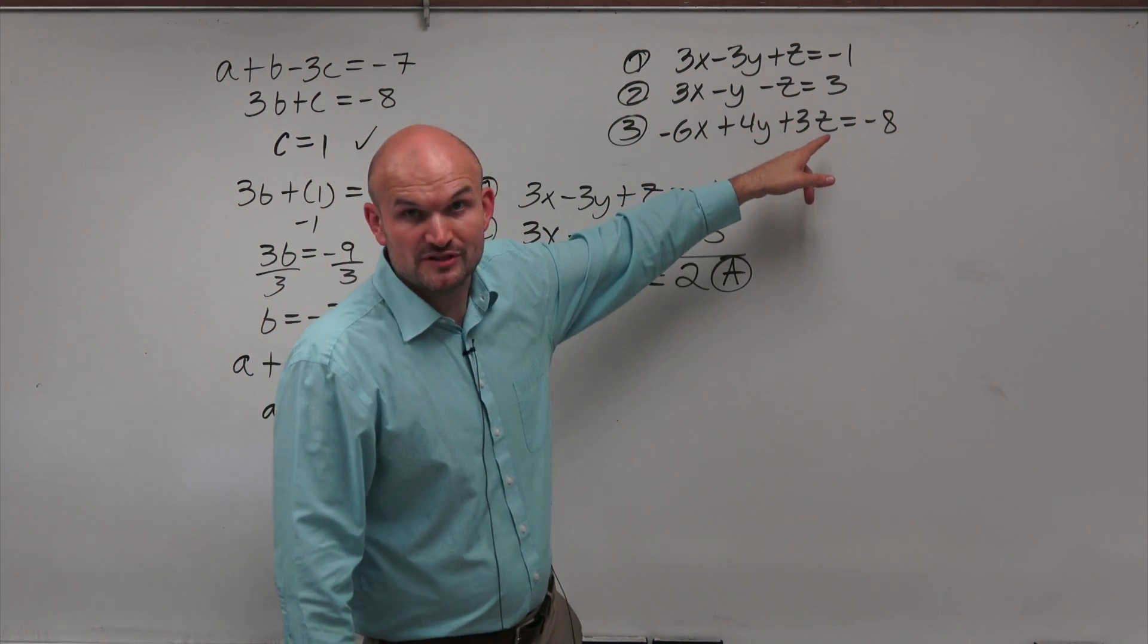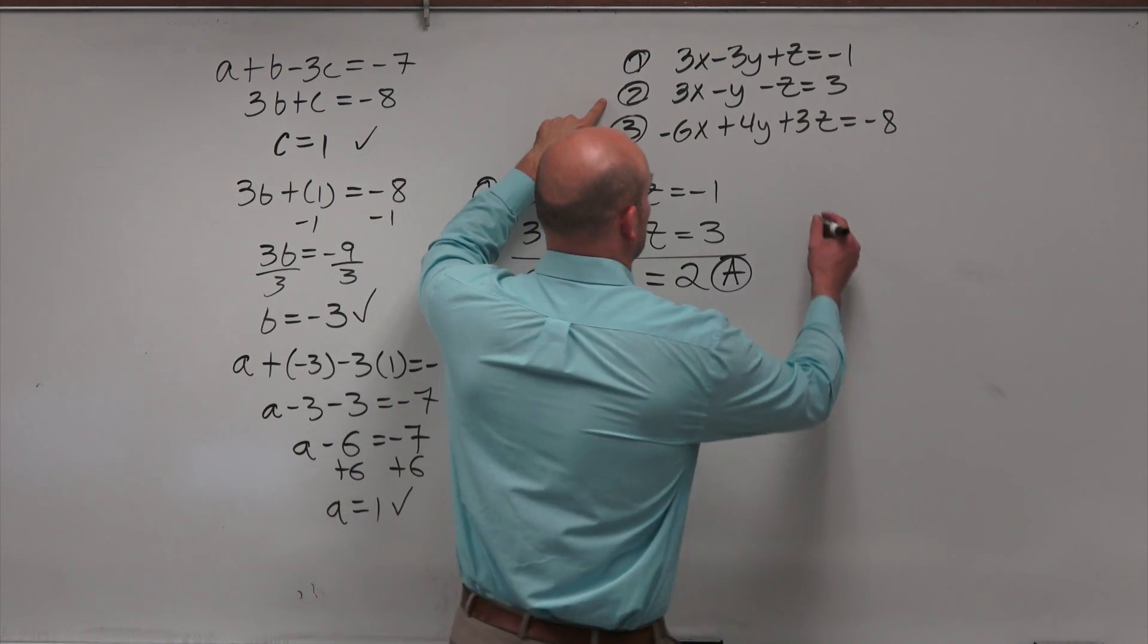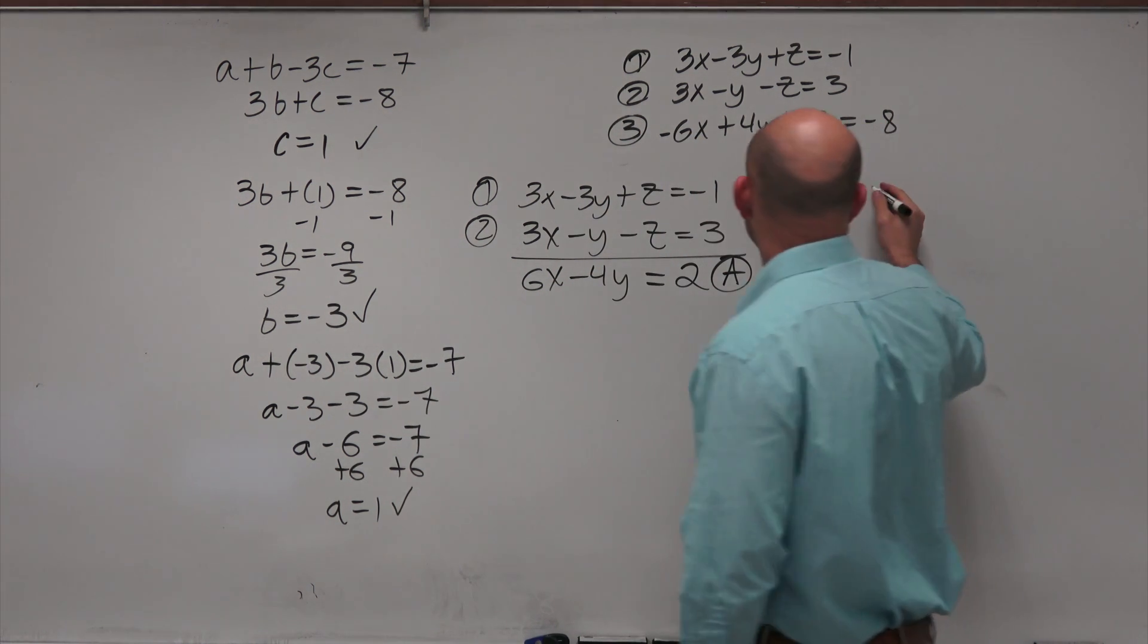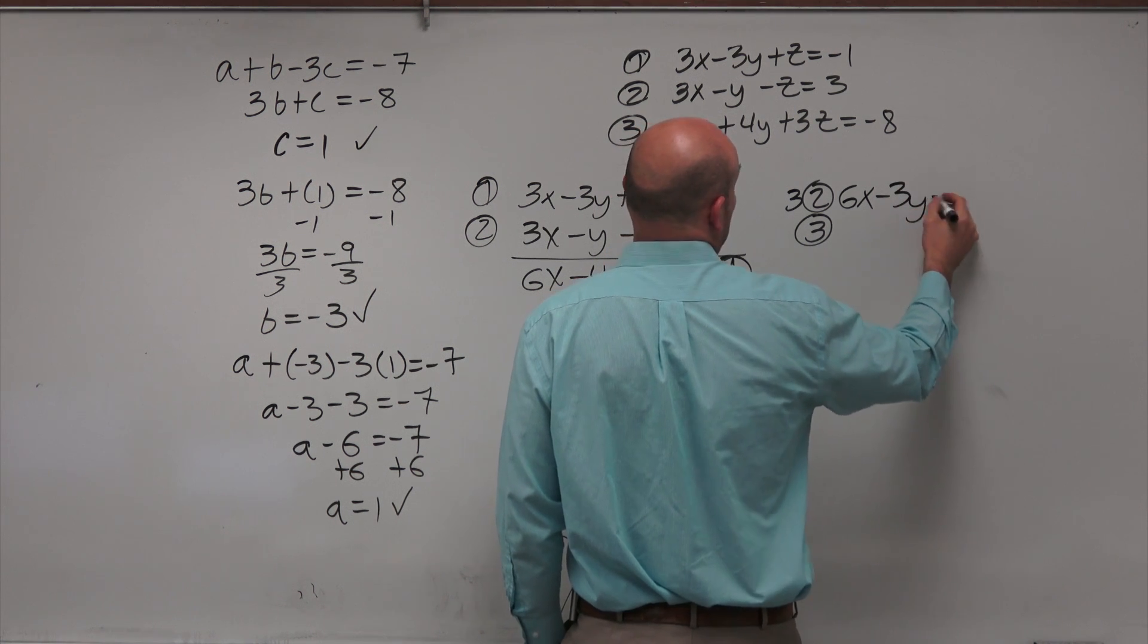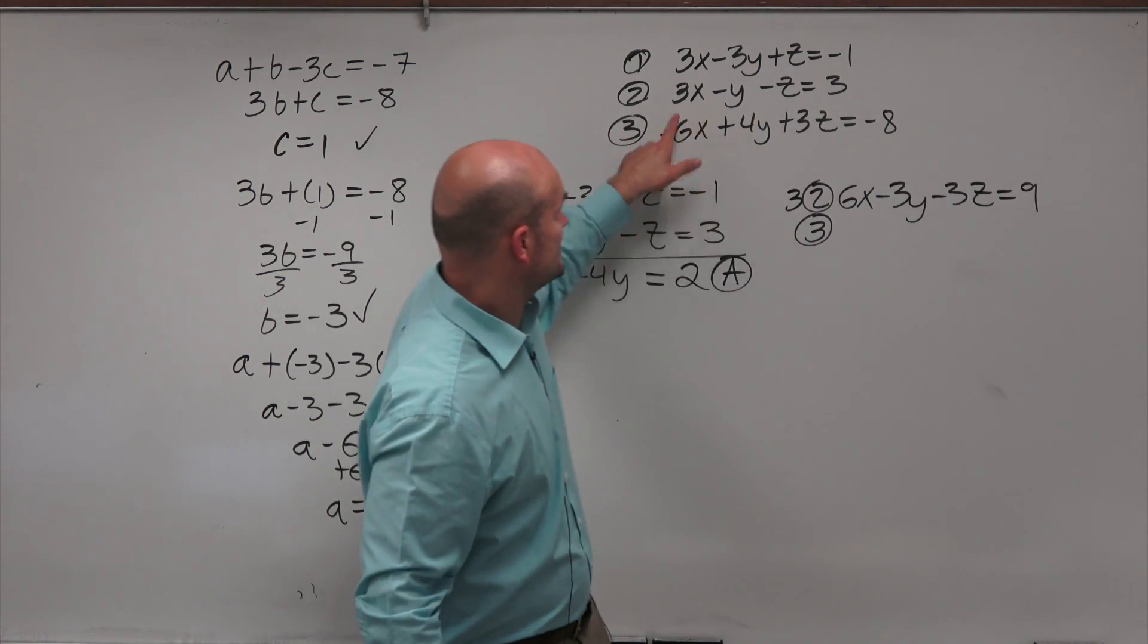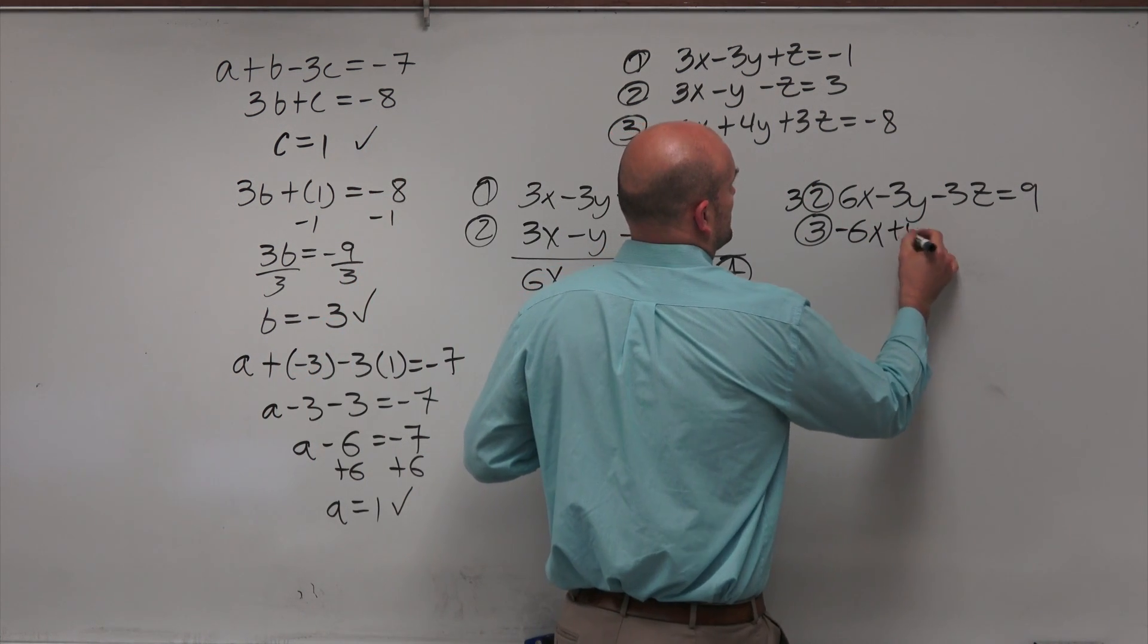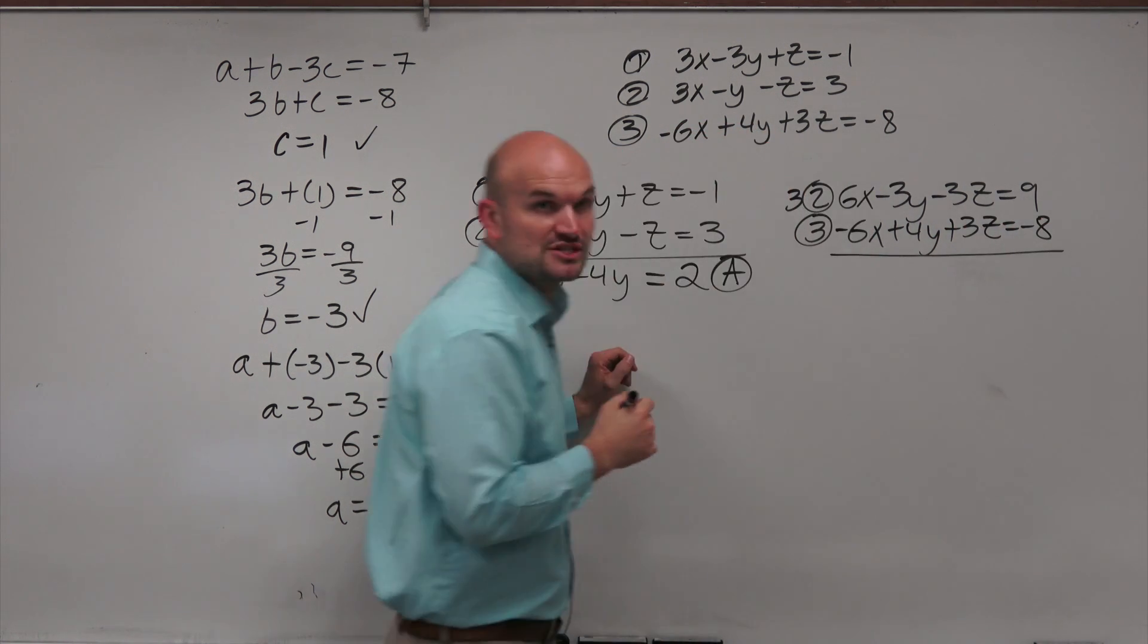However, they need to have the same coefficient. This needs to be a negative 3, and that needs to be a positive 3. So what I can do is I can multiply equation 2 by a scalar. And that scalar is going to be 3. And then you're going to add that to equation 3. So when I multiply equation 2 by a scalar, I'm going to get a 6x minus 3y minus 3z equals 9. Then I take equation number 3, which is a negative 6x plus 4y plus 3z equals negative 8. Now I add these two equations together.